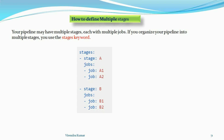Now in this video session I am going to discuss about the multi-stage configuration — what and how we can do multiple stages configuration into the system. Your pipeline may have multiple stages, meaning we can define more than one stage into one pipeline, each with multiple jobs. If you want to organize your pipeline into multiple stages, you can use the stages keyword.